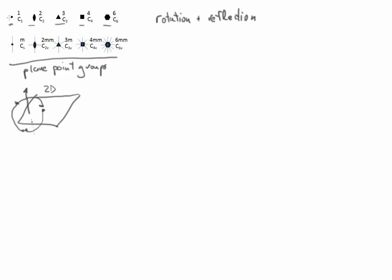We can also think about how these rotation axes interact with mirror planes. To do that, we need one important theorem relating what happens when we combine mirror planes and rotation axes. Consider some rotation axis A-alpha lying at the intersection of two mirror planes. If I have a general object located here, it gets reflected across the first mirror plane M1 to a position here, and then reflected across M2 to a position over here.